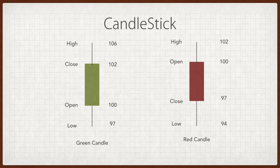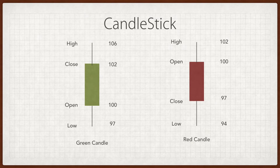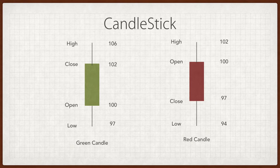Let's say the stock of Ashok Leyland opened at 100 rupees today. It went down to 97 during the day, then new investors came in thinking the stock would move upwards, taking the price from 97 all the way to 106 — the day's high. Then a few investors started booking profits and the stock eventually closed at 102. That is a green candle.